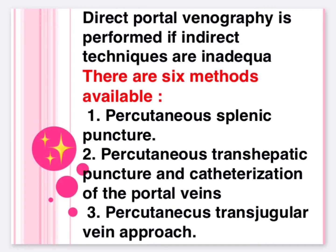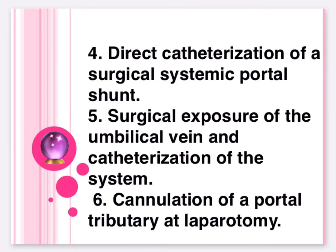There are six methods available for direct portal venography: one, percutaneous splenic puncture; two, percutaneous trans-hepatic puncture and catheterization of the portal veins; three, percutaneous trans-jugular vein approach; four, direct catheterization of a surgical systemic portal shunt; five, surgical exposure of the umbilical vein and catheterization of the system; six, canalization of a portal tributary at laparotomy.